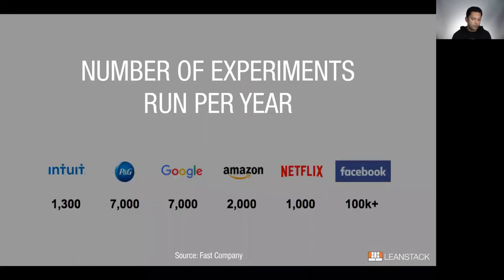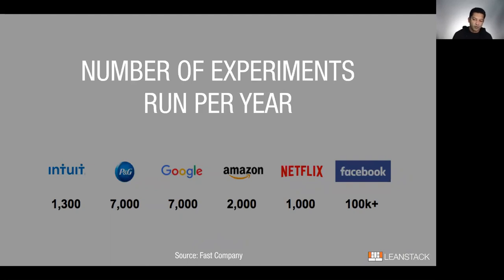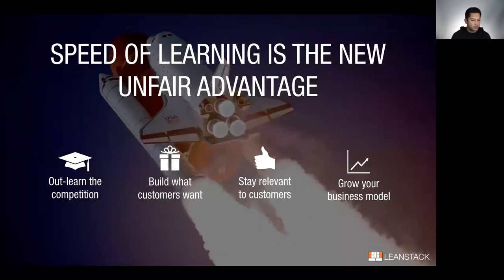Lots of companies are embracing this idea of experimentation over execution. The old model was a very top-down approach: create a perfect plan and execute it. The new model — because the pace of change is so fast — basically admits we may not know where the next big idea is coming from, so we use an experimental mindset to uncover it. The new unfair advantage is no longer speed of execution; it's speed of learning.